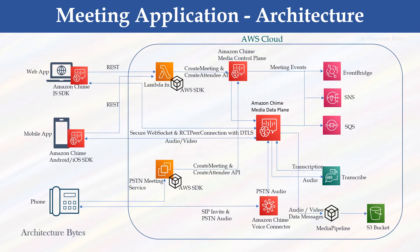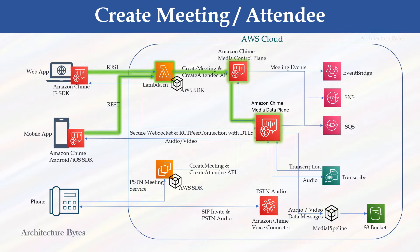Here is the architecture of our meeting application. Let us understand the building blocks of this architecture one by one by going over various request flows. The request flow is highlighted here in green. In order to create a meeting or add an attendee, the client Chime SDK makes a REST call to a Lambda function, which uses the Chime API in AWS SDK to invoke the Amazon Chime Media Control Plane. The Control Plane in turn creates the meeting in Amazon Chime Media Data Plane. A meeting is always created in a specific region, and the client requester can pass a preferred meeting region along with the meeting creation request. In general, meetings should be created in a region closest to the meeting attendees.